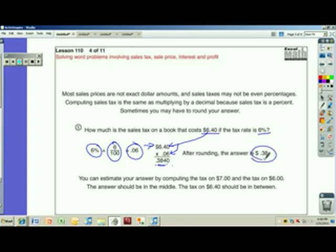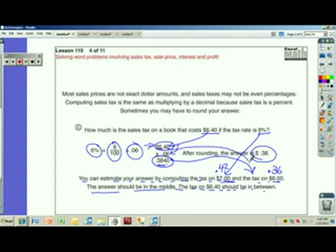You can estimate your answer by computing the tax on $7 and the tax on $6.00. And your answer should be in the middle. If the tax rate is 6% on $7, that would be 42 cents. And on $6 it would be 36 cents. So this answer should be between those two because $6.40 comes between 6 and 7. So the tax should be between 36 and 42 cents. And 38 cents does come between those. You would not put $3.84. Why would you pay $3.84 in tax when it only costs $6.40? That doesn't make any sense.